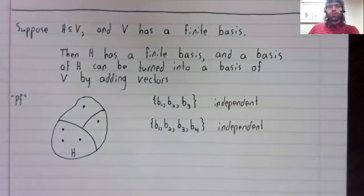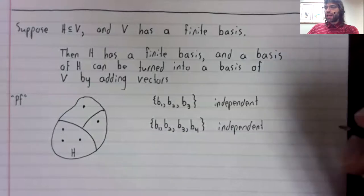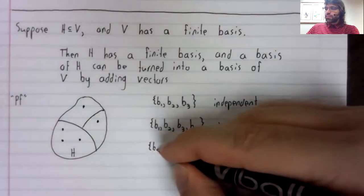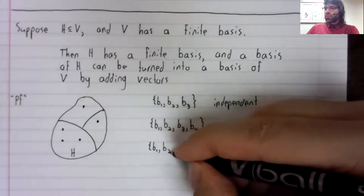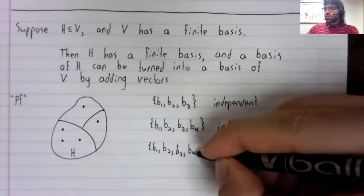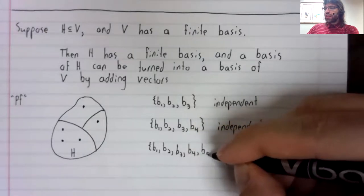Pick a vector, any vector that we're not spanning. Add it to the set.